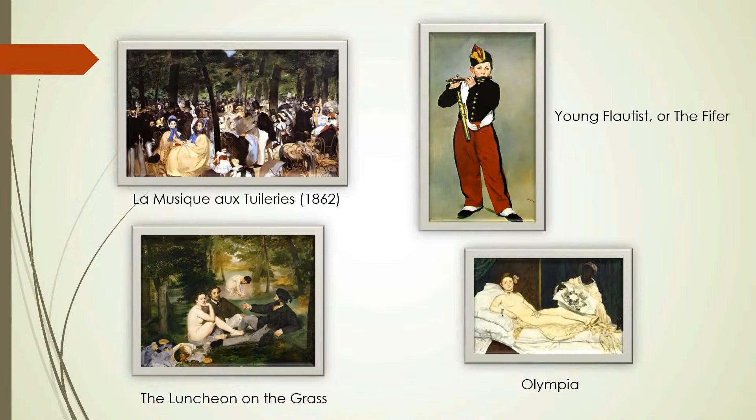Today these are considered watershed paintings that mark the start of modern art. In the last 20 years of Manet's life, he forged bonds with other great artists of the time. He developed his own simple and direct style that would be heralded as innovative and serve as a major influence for future painters.